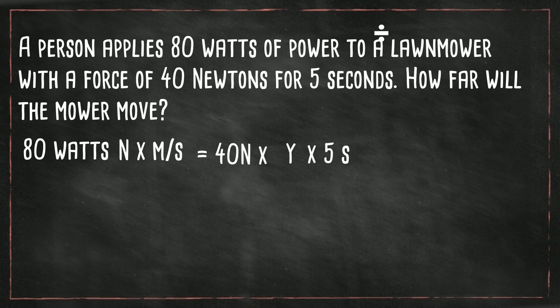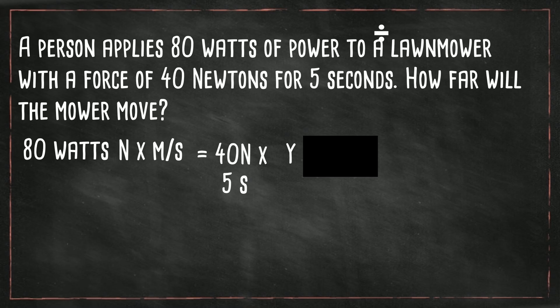Now all we do is solve for y. Let's go ahead and do 40 divided by five, which is eight. Notice now we have newtons per second times y. We want to isolate the y, so we can divide through by eight on both sides.